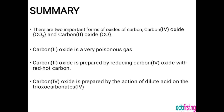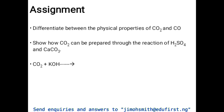In summary, there are two important forms of oxides of carbon: carbon four oxide (CO2) and carbon two oxide (CO). Carbon two oxide is a very poisonous gas. Carbon two oxide is prepared by reducing CO2 with red-hot carbon. Carbon four oxide is prepared by the action of dilute acid on a carbonate. Please try the assignments on your own — I would love to get feedback from you. Thank you.